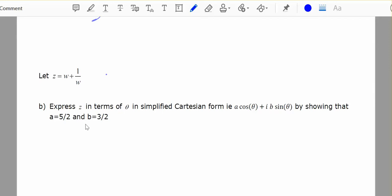So I can then say that z will equal two cis theta plus a half cis negative theta. Taking the previous bit that I had,